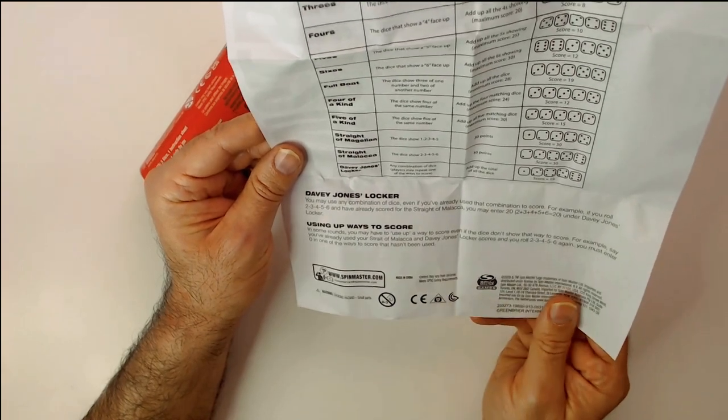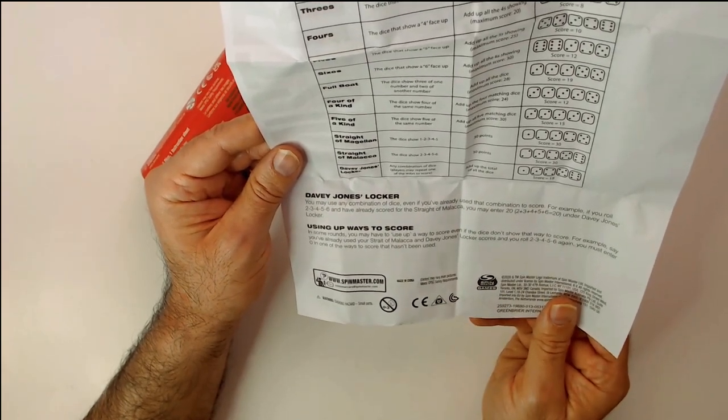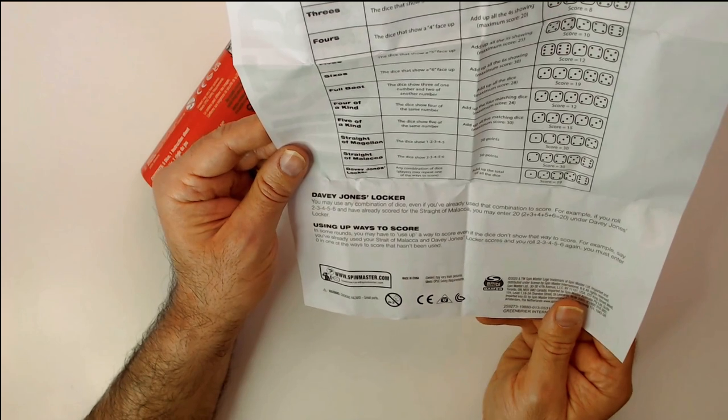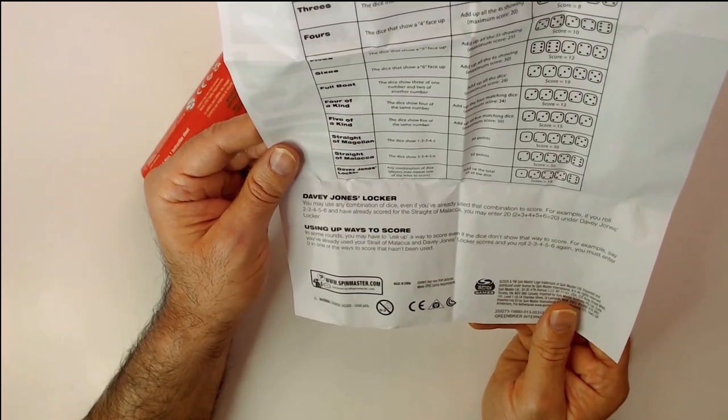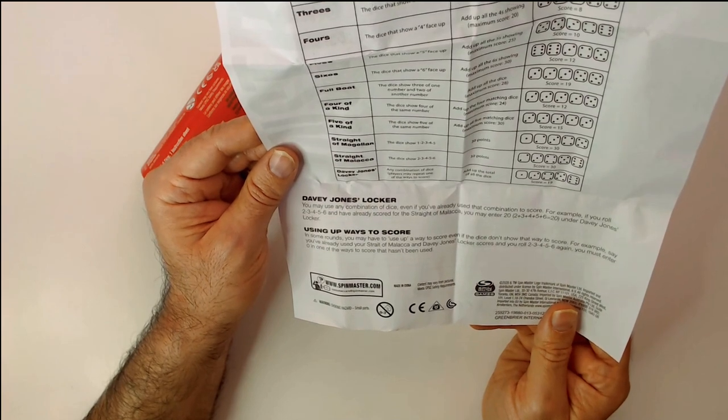Use any combination of dice. You can already use that combination of score. For example, we roll two, three, four, five, six. If you've already scored a straight, you may enter 20. Okay. Under Davy Jones locker. All right. Well, that's interesting.